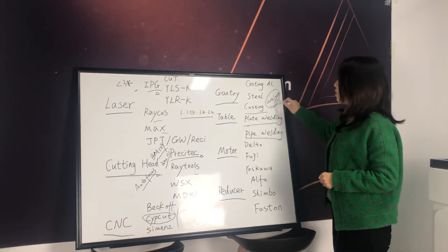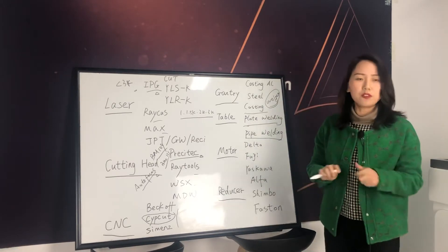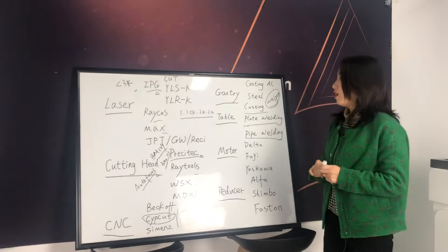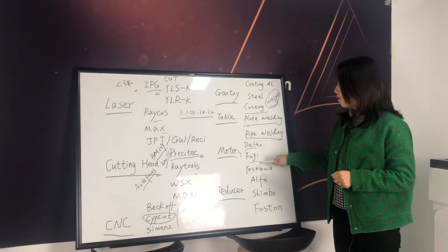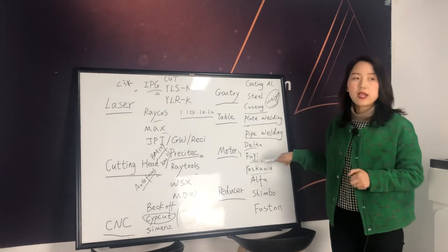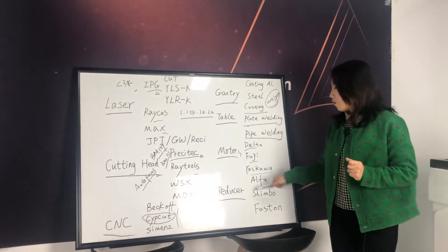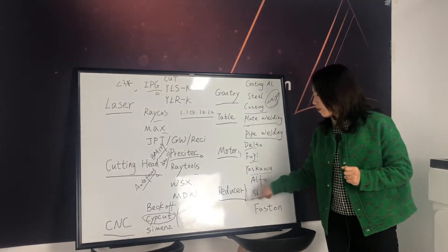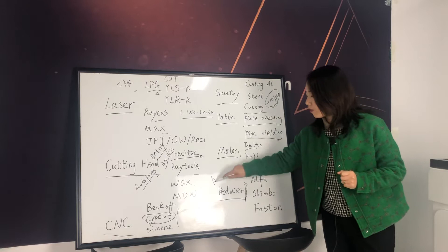Different weight and different design decide the accuracy of the machine, how long it will last. So it's also very important. For motors, we have Delta, Fuji, Yaskawa, these are main brands. And price difference not big, but still they have. For reducer, this is very critical. It decides the accuracy of the fast moving.